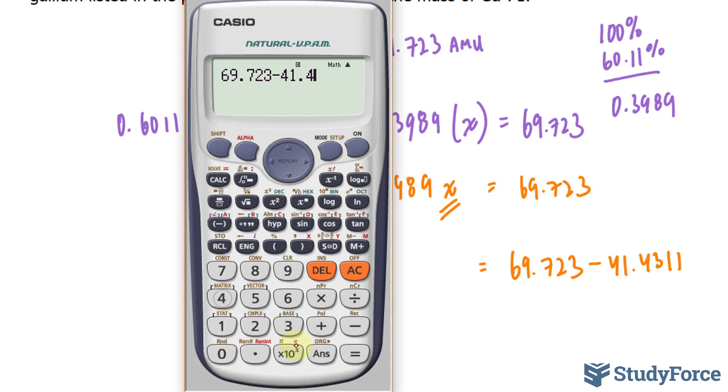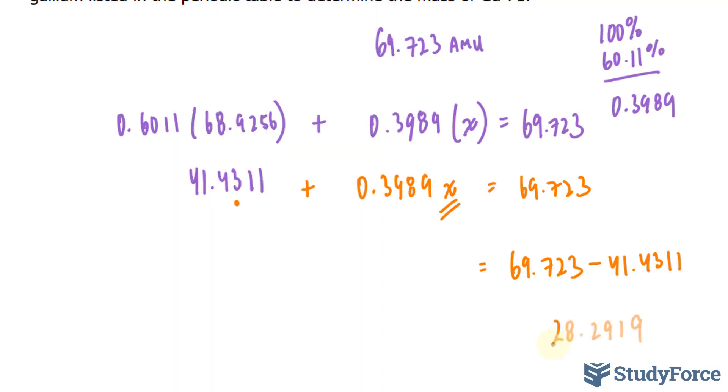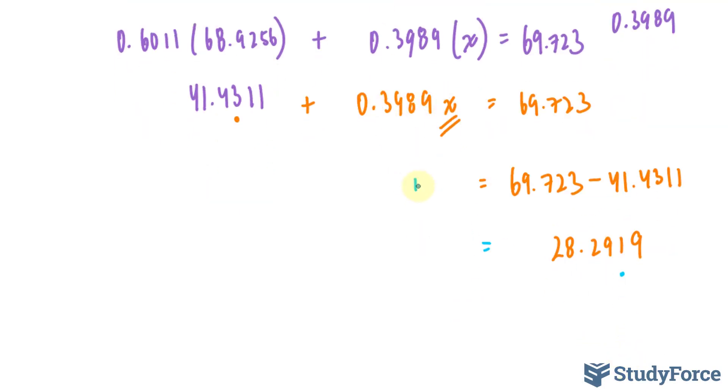69.723 minus 41.4311. That gives us 28.2919. And I mentioned that we should only have three numbers after that decimal place, so I'll just put a dot right there because there's still some more math left. This part remains the way it is, and I'll write it down here.